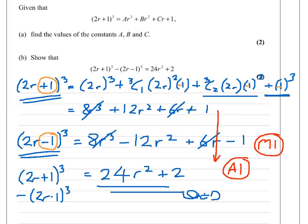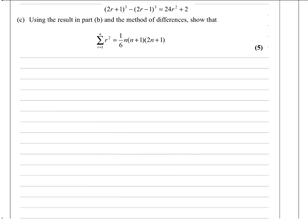We've got 4 marks of this 9 mark question. In part (c), I've got to use that result I've just proven and the method of differences to show the result given here. I don't have r² on its own at the moment. I've got 24r² plus 2, and I know that's the same as (2r+1)³ minus (2r-1)³.